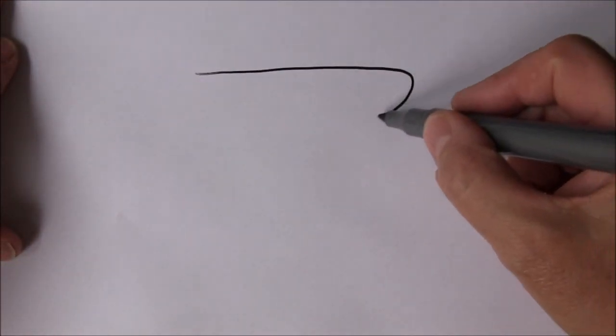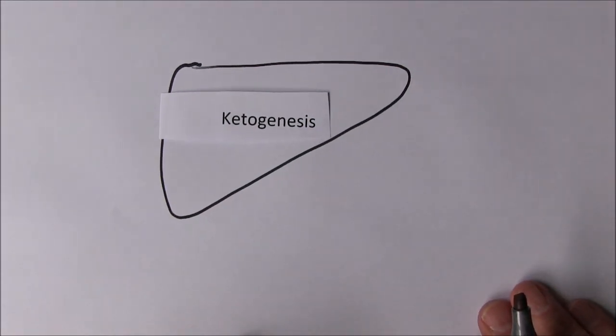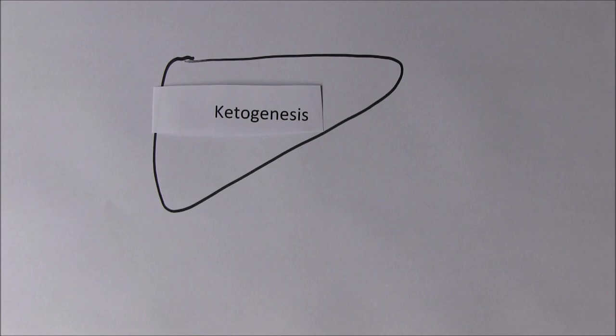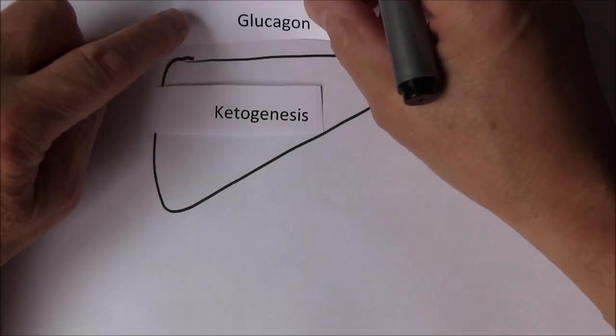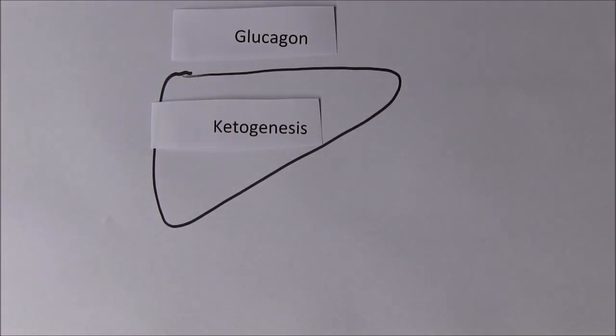Now while we're doing this I think I'll just mention maybe one last function of the liver. It's quite an important one. Well they're all important of course. But let's think about another function of the liver. And the one I want to think about now is ketogenesis. The liver will produce ketones. And this happens particularly under the influence of the hormone glucagon released from the alpha cells in the pancreatic islets of Langerhans.